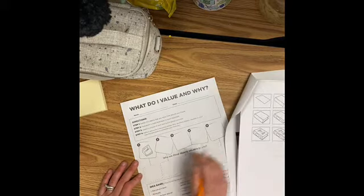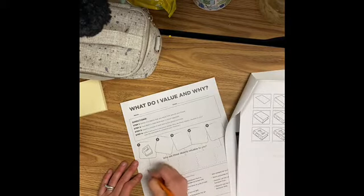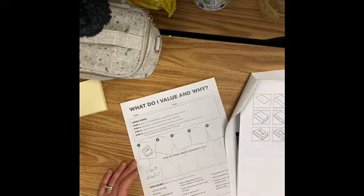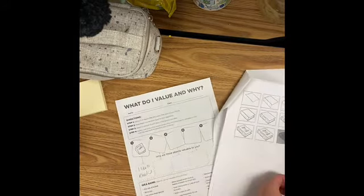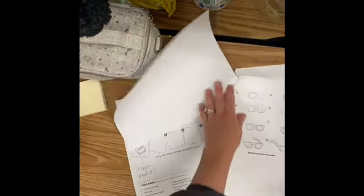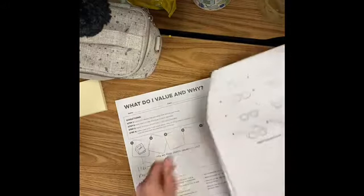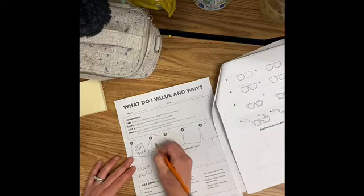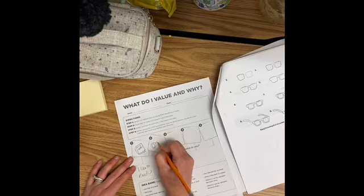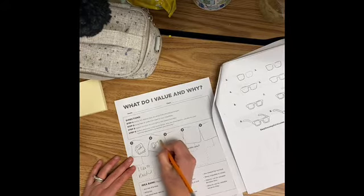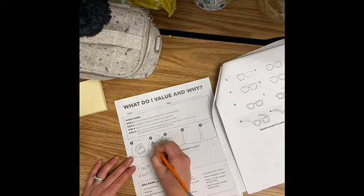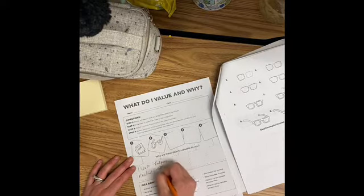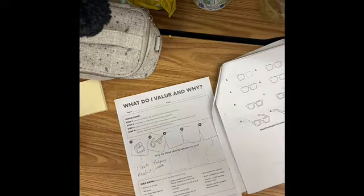And down here it says, why are these objects valuable to you? I like to read with a little smiley face. And then I'm going to think of something else that's important to me. Maybe a pair of glasses because they help me see. And you're going to keep working like that until you have five different objects that mean something to you. I'll time lapse you while I finish.